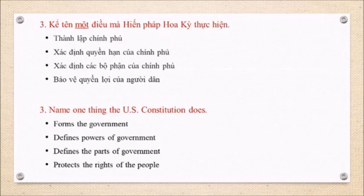Question 3: Name one thing the U.S. Constitution does. Forms the government. Defines powers of government. Defines the parts of government. Protects the rights of the people.